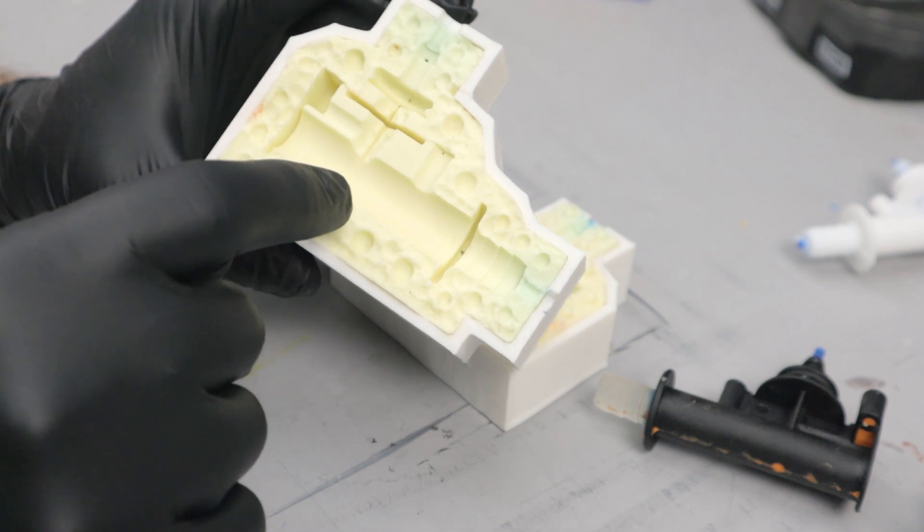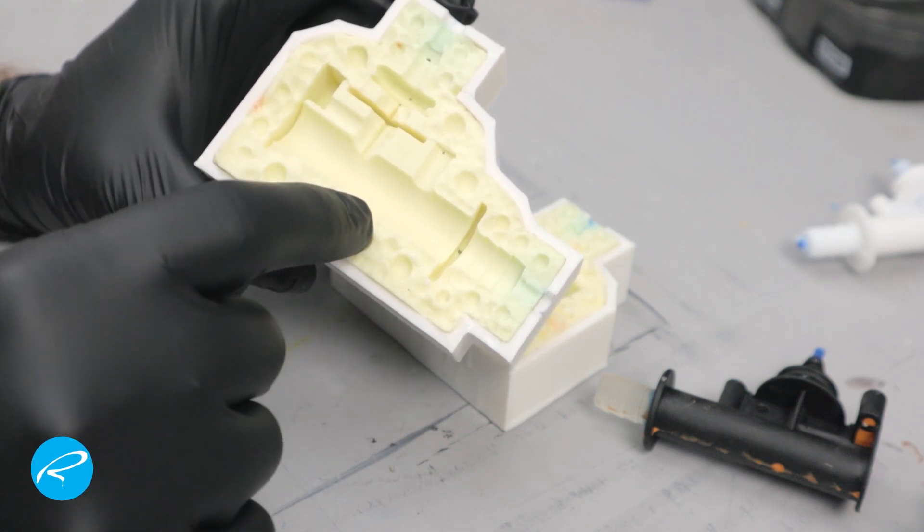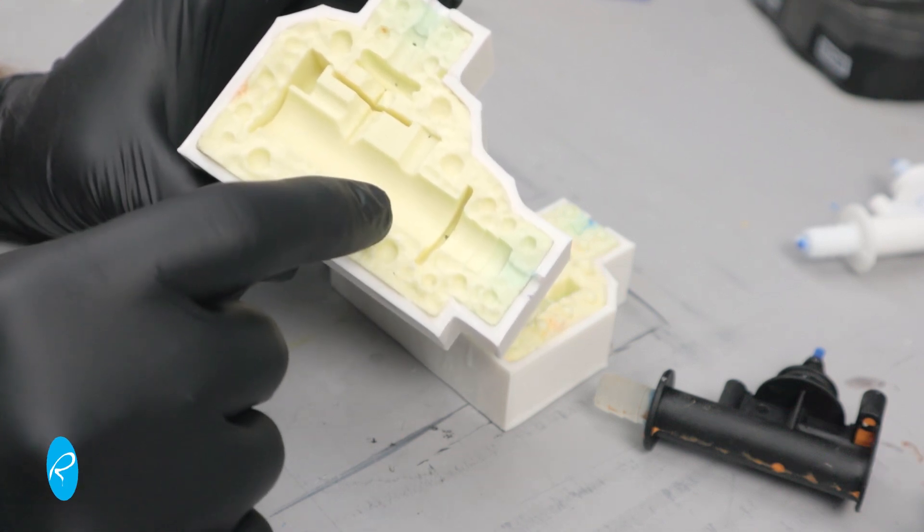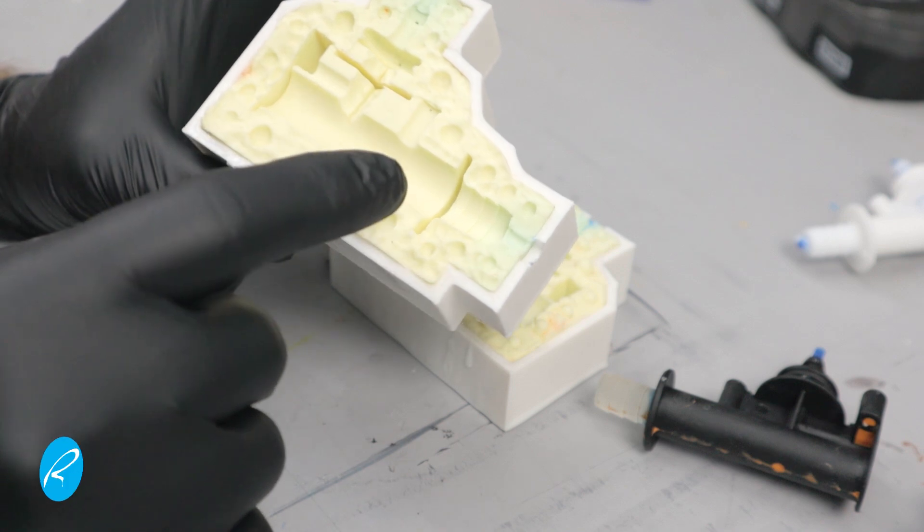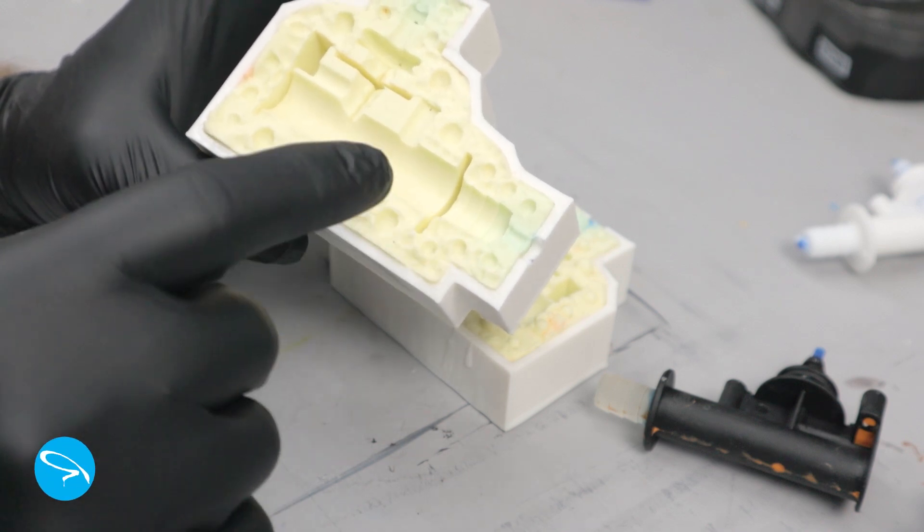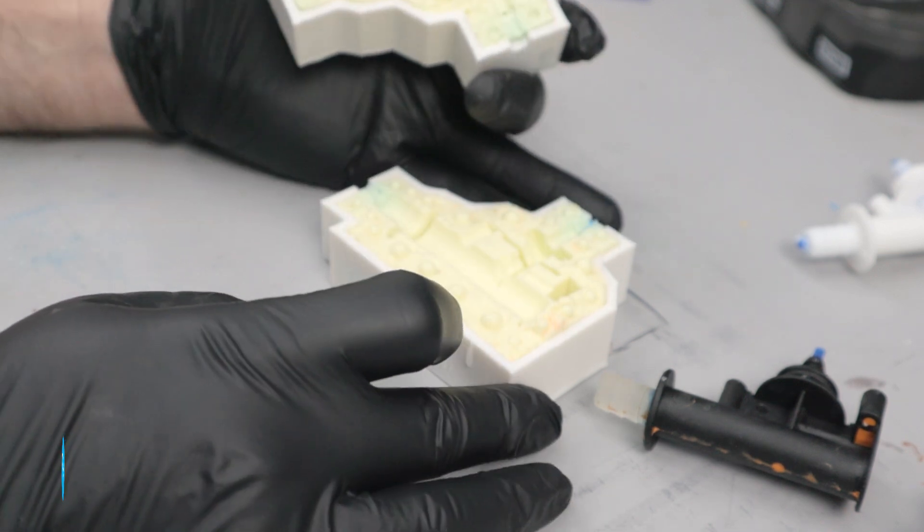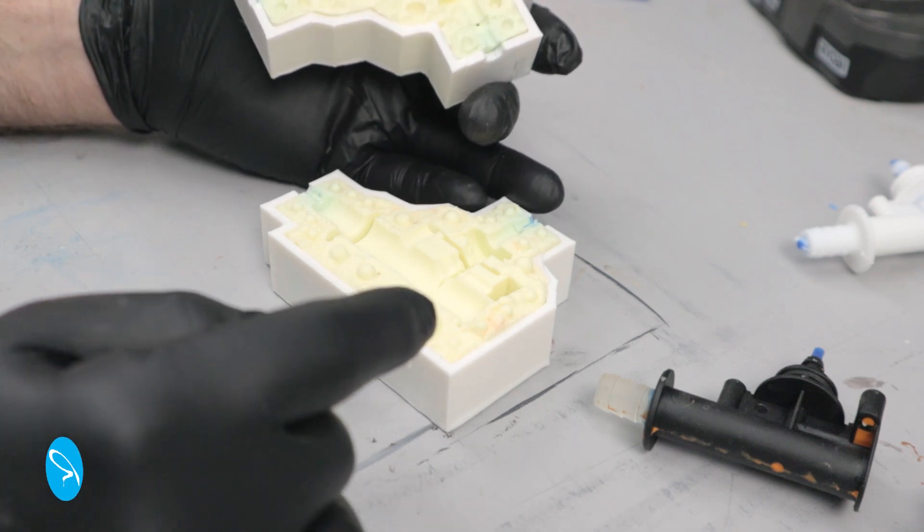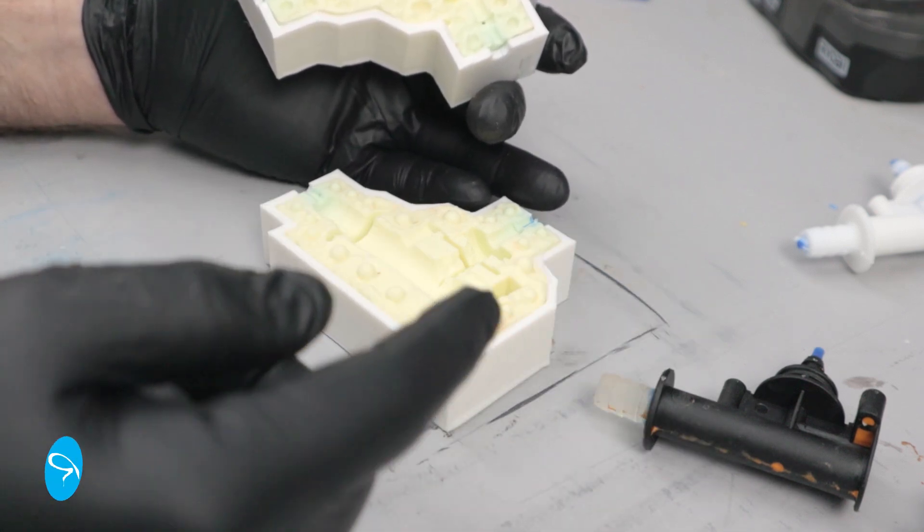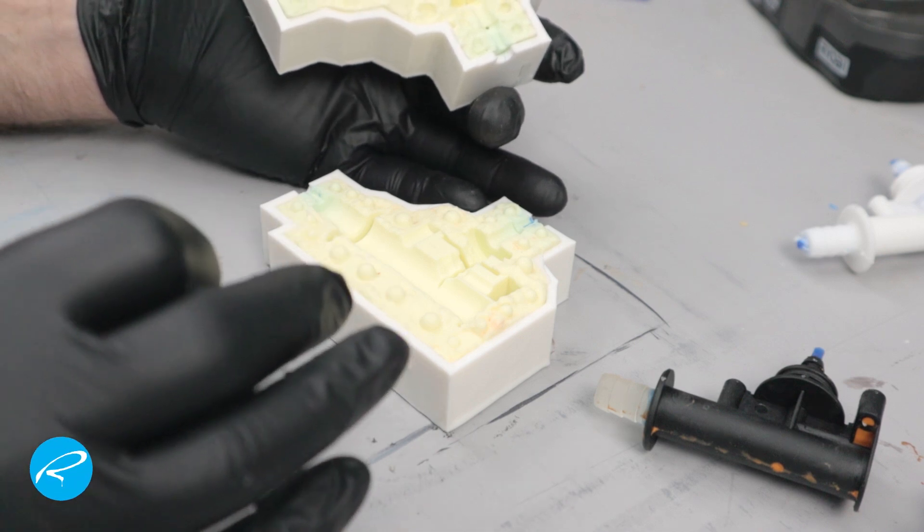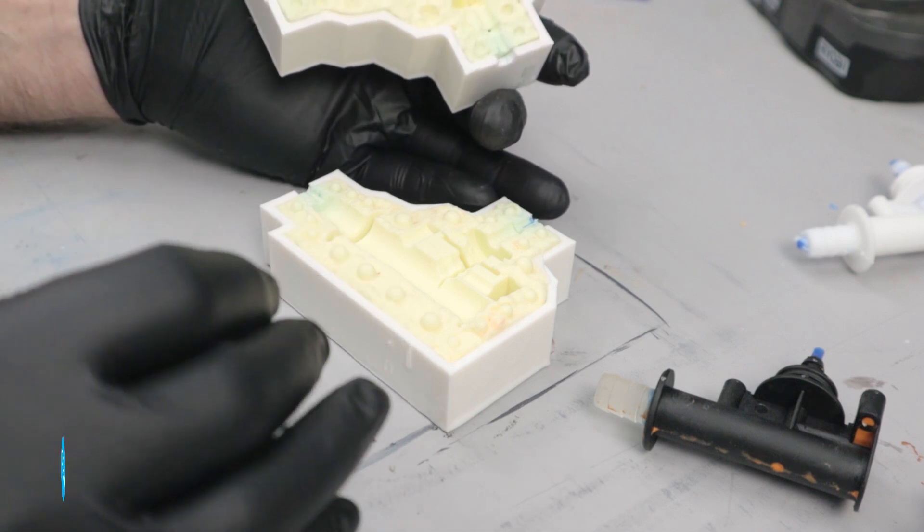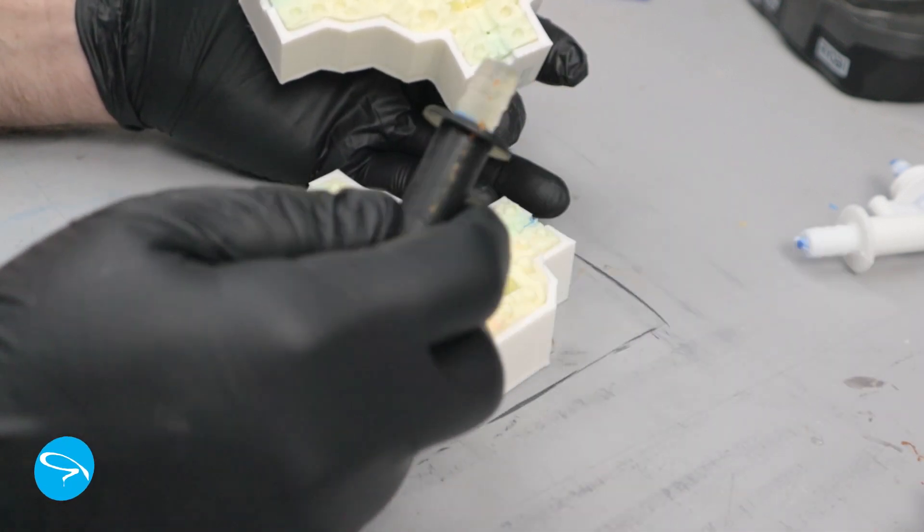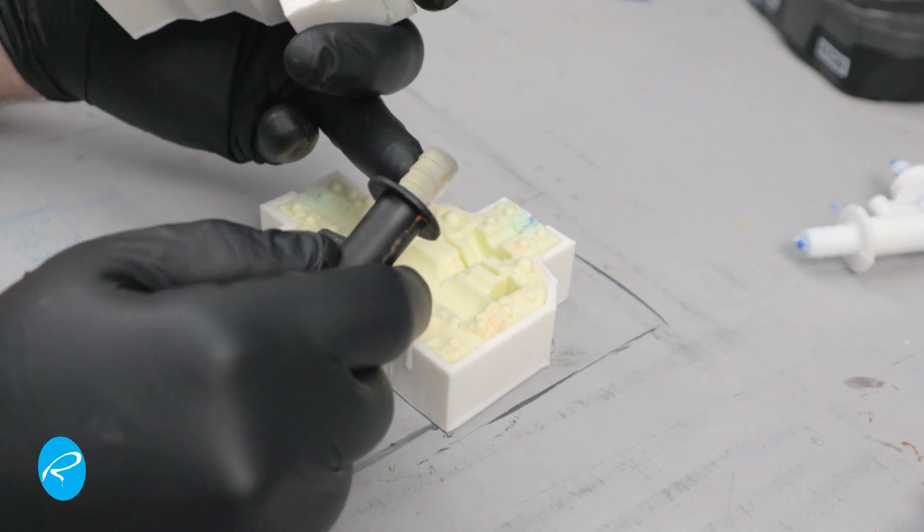This is Smooth-On's NV29. It's a no-vacuum 29 shore durometer silicone. It's a tin-cured silicone. Platinum-cured silicone is not going to work well with 3D printed resin parts. So this would cause cure inhibition and stuff.